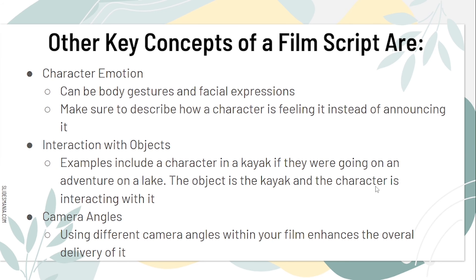Other key concepts of a film script are character emotion, interaction with objects, and camera angles. Character emotion can be body gestures and facial expressions, and make sure to describe how a character is feeling instead of announcing it. For camera angles, using different camera angles within your film enhances the overall delivery of it.